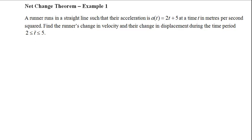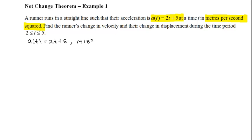Here we know that t is going to be in seconds. We know this because we're given acceleration, which is 2t plus 5, and we're told that the units are meters per second squared. So the acceleration is equal to 2t plus 5 with units of meters per second squared. Since the unit of time is seconds, we can write that t is going from 2 to 5 seconds.